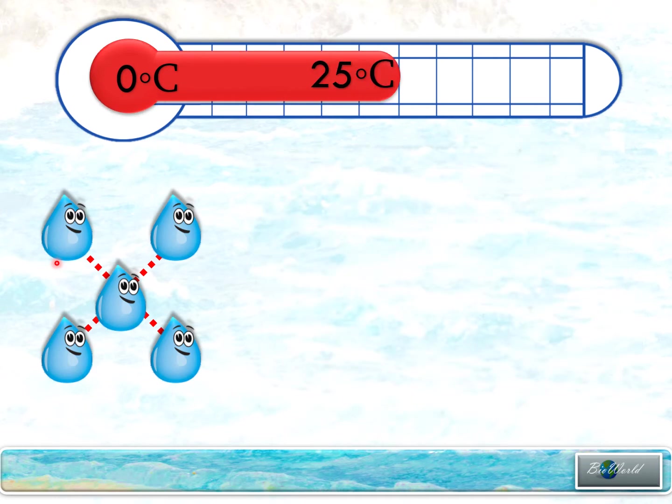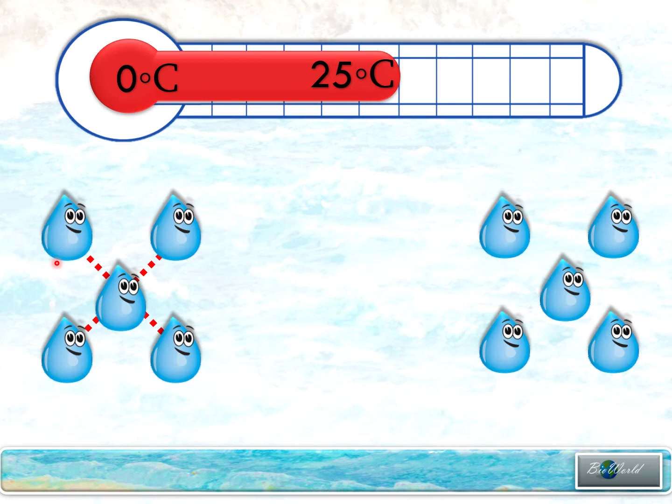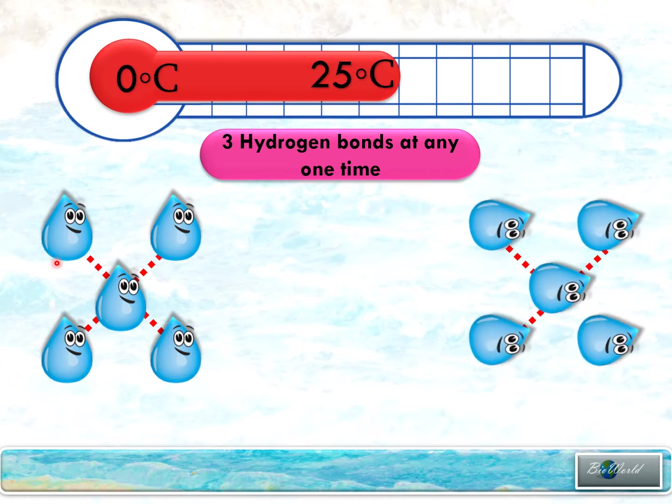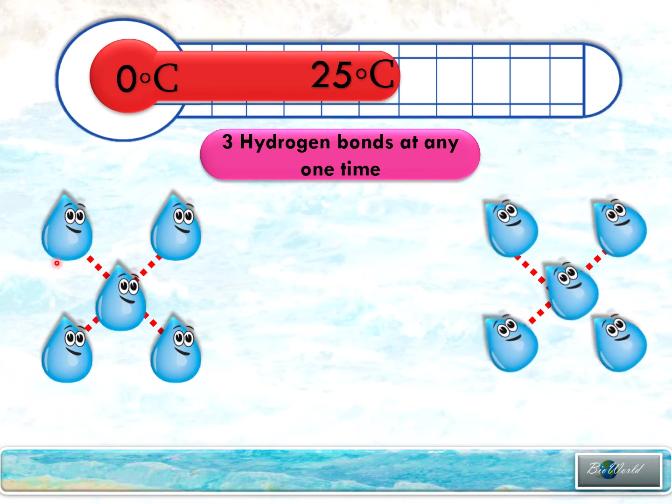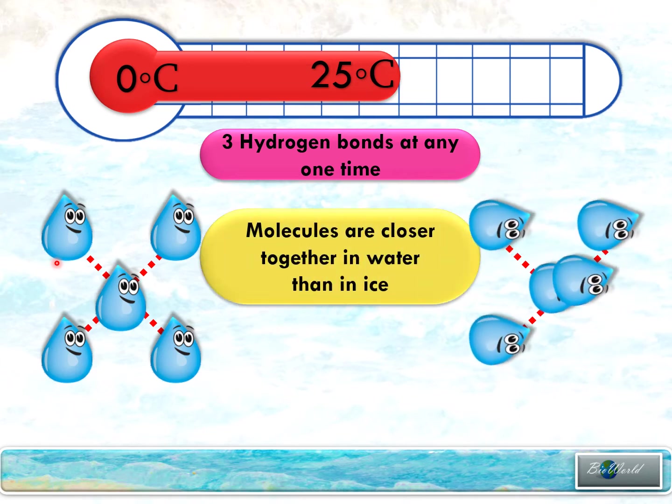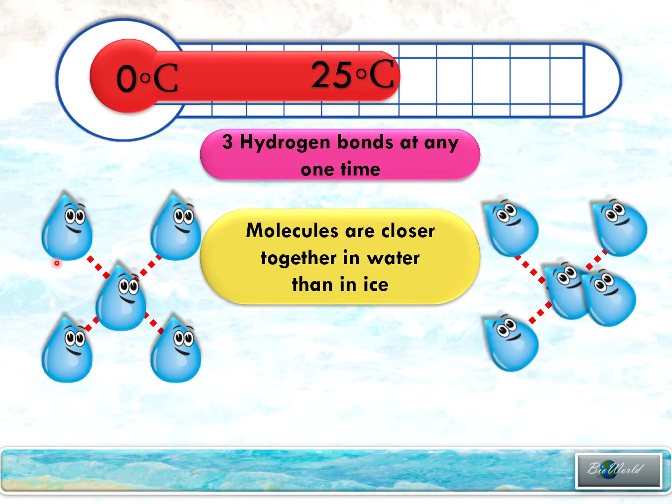At 25 degrees Celsius, anywhere between 0 to 99 degrees Celsius, water will have kinetic energy. Of course, the kinetic energy is not as high as water at 100 degrees Celsius, but the movement of the water molecule prevents it from forming four hydrogen bonds. In liquid form, water actually is only able to form three hydrogen bonds at any one time.